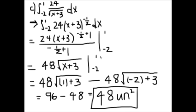Then you plug these boundaries in. So it would be 48 times 1 plus 3 minus 48 times negative 2 plus 3. That simplifies to 96 minus 48, which equals 48 units squared.